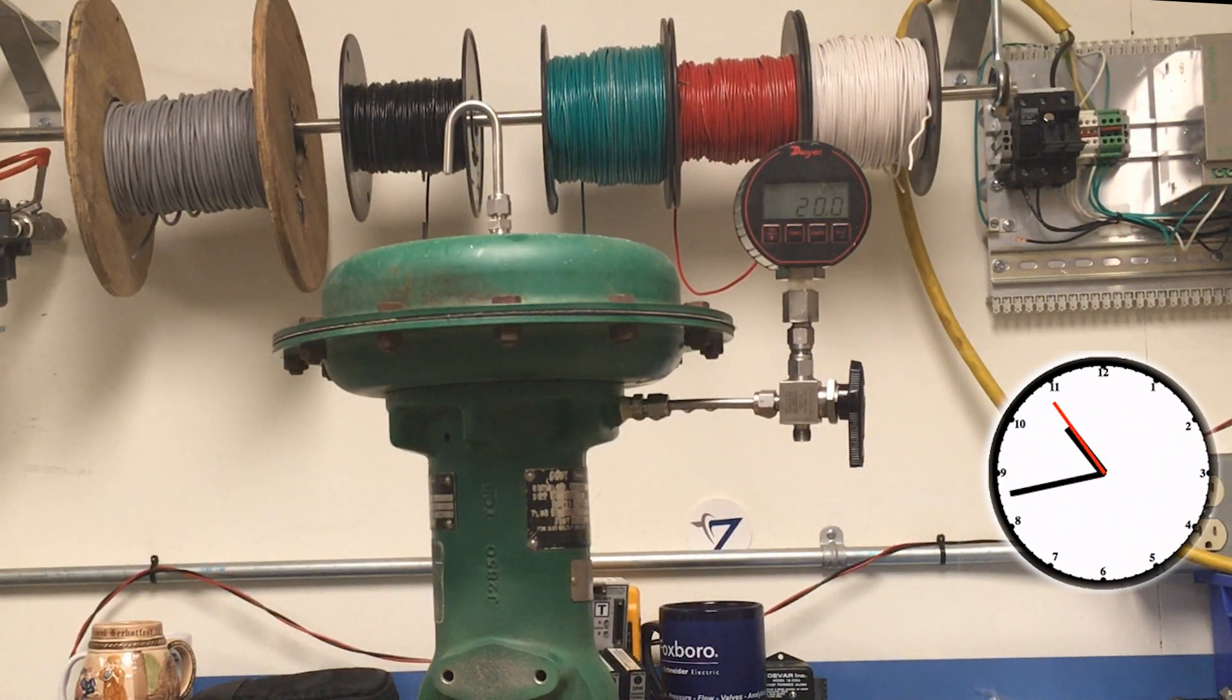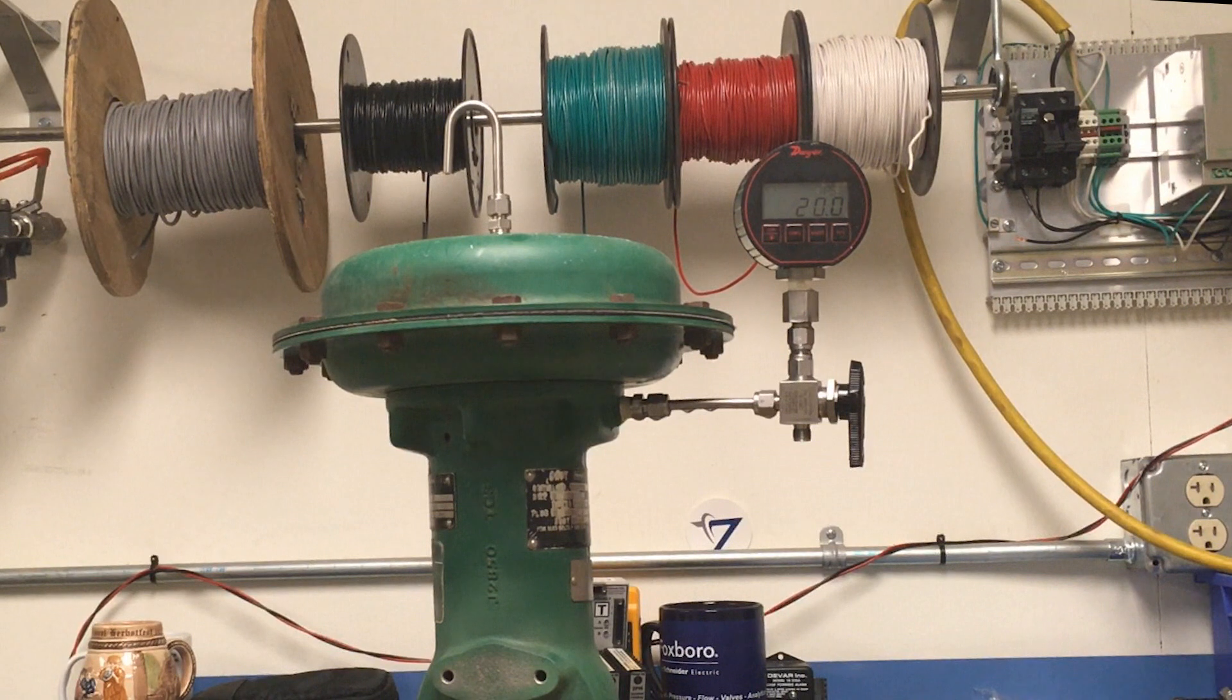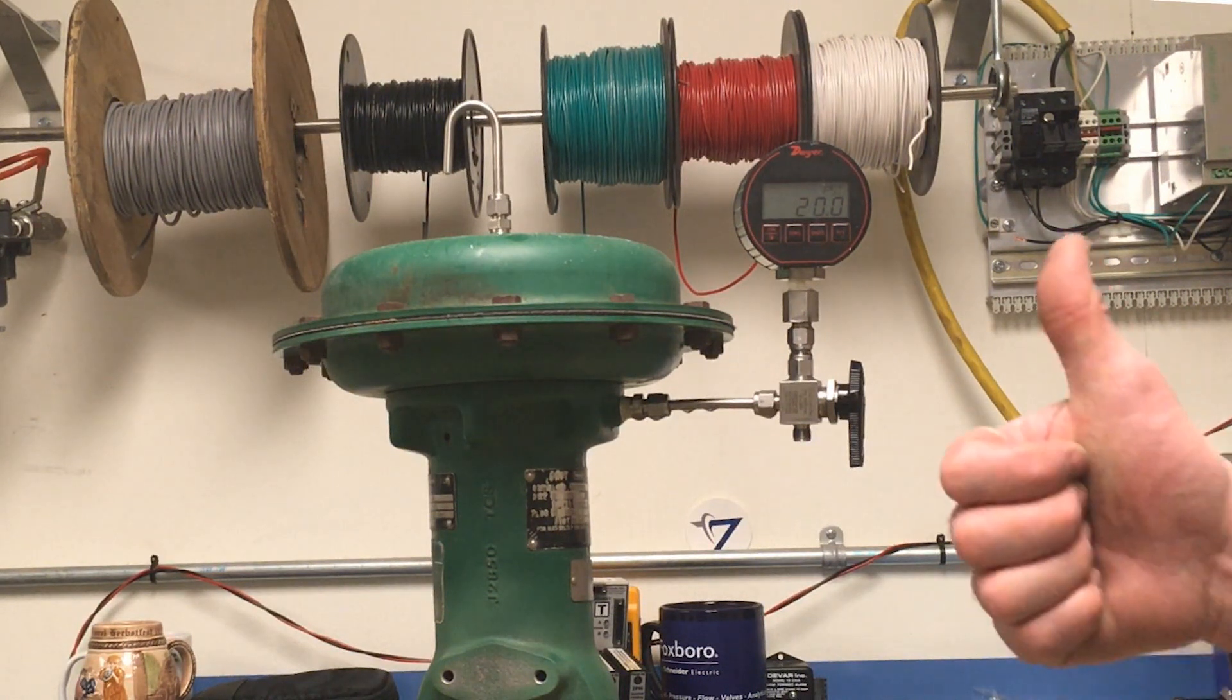When the test is complete, the actuator should not leak air at all. However, as long as the leak rate is no more than 1 psi per minute, the performance should not be affected.